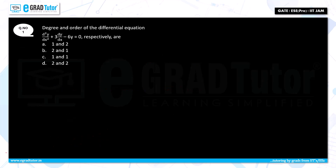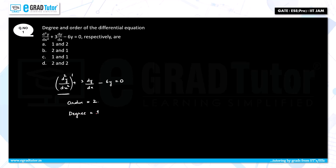These questions are asked frequently in examinations. Let us solve some examples. For d square y by dx square plus 3 dy by dx minus 6y equal to 0: the highest order derivative is d square y by dx square, so order is 2. The power of the highest order derivative is 1, so degree is 1.